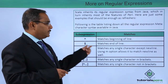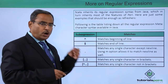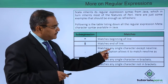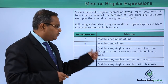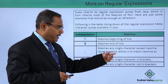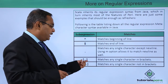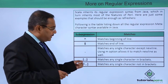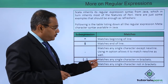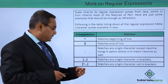The dollar sign `$` matches at the end of the line. The dot `.` — a single full stop — matches any single character except the newline. Using the `m` option allows it to match the newline as well. Square brackets with a list of characters match any single character within the brackets.